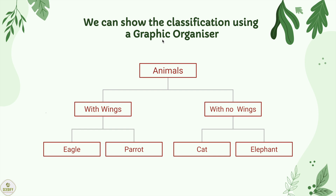We can also show the classification using a graphic organizer. Animals with wings: eagle, a parrot. Animals with no wings: cat, an elephant.